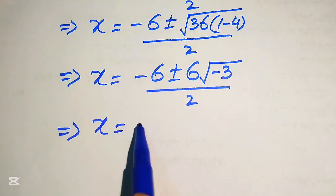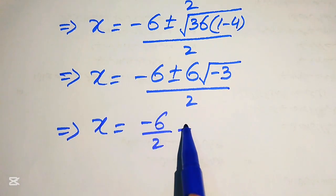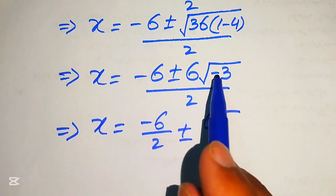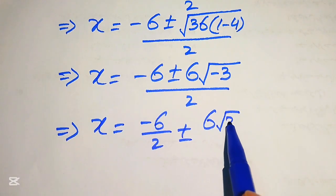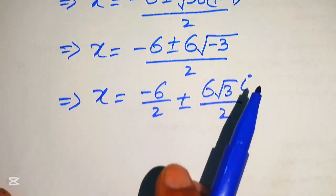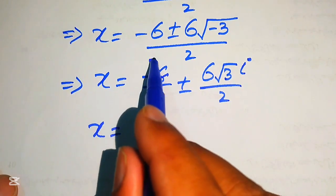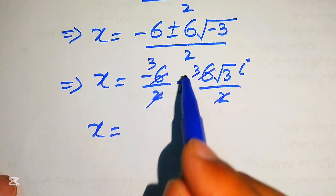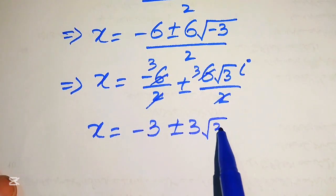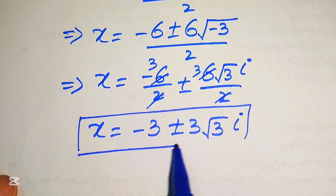Breaking the fraction, we get −6/2 ± (6/2)·√(−3). Since √(−1) = i, we write √(−3) = √3·i. This gives x = −3 ± 3√3·i. So the two complex roots from Case 1 are x = −3 + 3√3·i and x = −3 − 3√3·i.